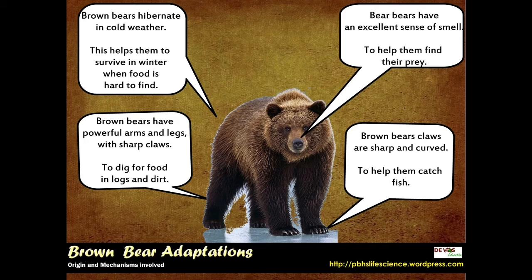For example, in bears there might be some that could have hibernated in the original population and some who did not. Some might have had powerful arms and legs with sharp claws. Some of these claws would have been curved to help them catch fish, and most of them would have had an excellent sense of smell to help them find their prey.